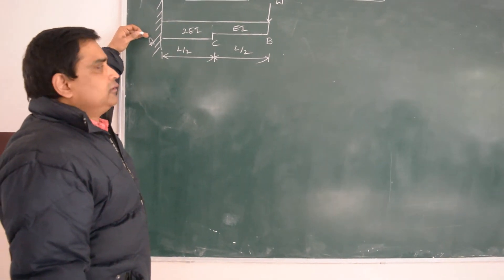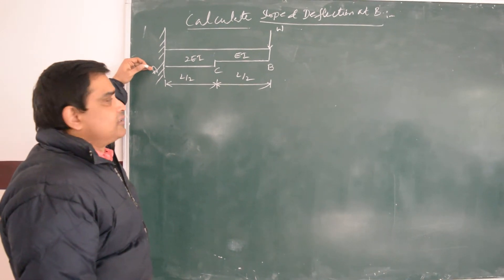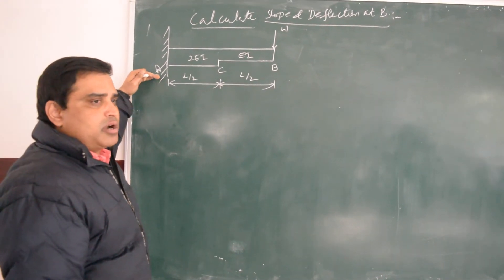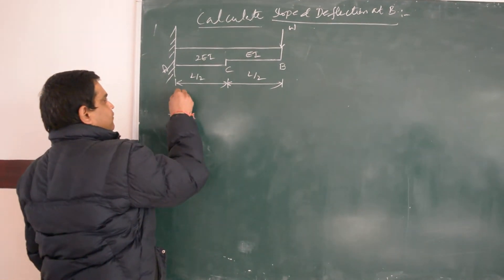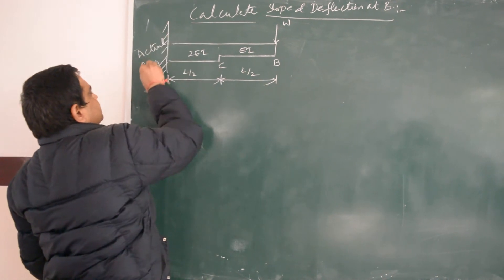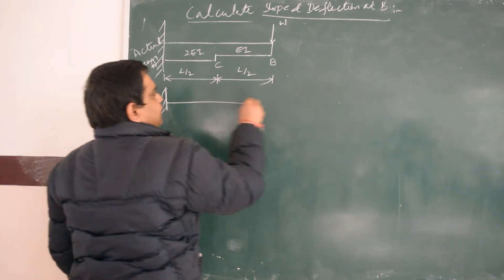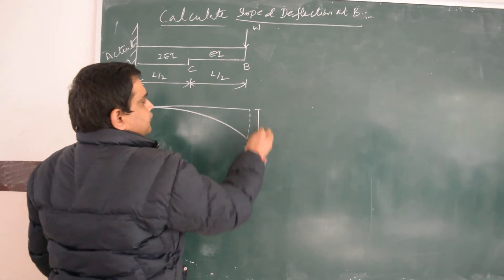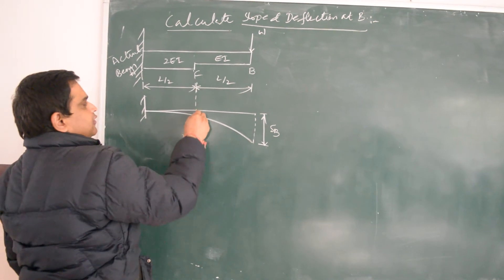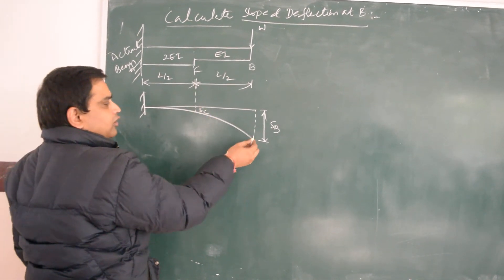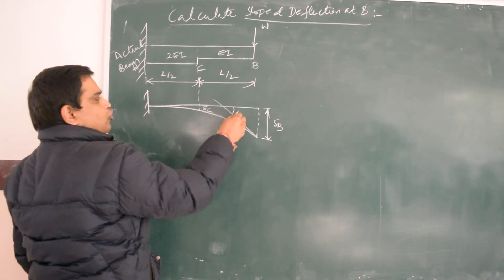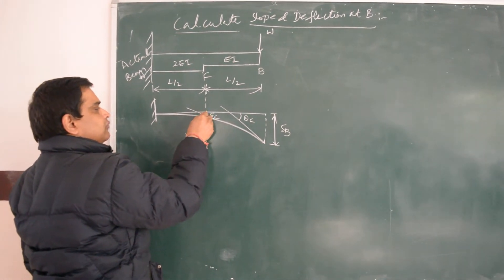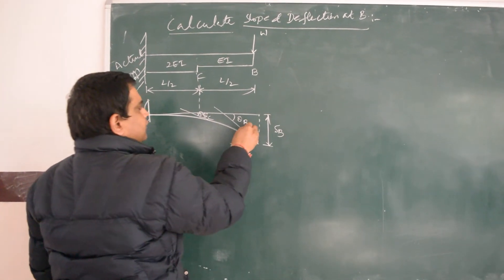The conjugate beam is an imaginary beam used to find slope and deflection. To find the slope or deflection, we draw an imaginary beam — also called the conjugate beam. This is the actual beam, and this is the deflected shape of the cantilever beam. The deflection is maximum at the free support, and the slope at C is the tangent drawn on the elastic curve at C.